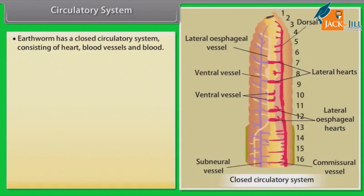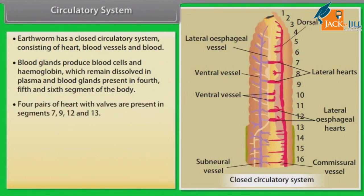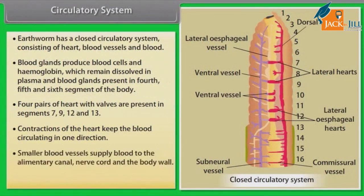Circulatory System: Earthworm has a closed circulatory system consisting of heart, blood vessels, and blood. Blood glands produce blood cells and hemoglobin, which remain dissolved in plasma. Blood glands are present in the fourth, fifth, and sixth segments. Four pairs of hearts with valves are present in segments 7, 9, 12, and 13. Contractions of the heart keep the blood circulating in one direction. Smaller blood vessels supply blood to the alimentary canal, nerve cord, and body wall. Blood cells are phagocytic in nature.